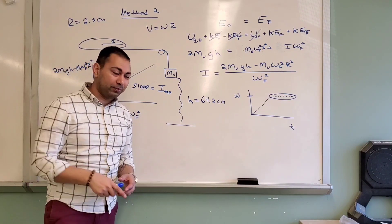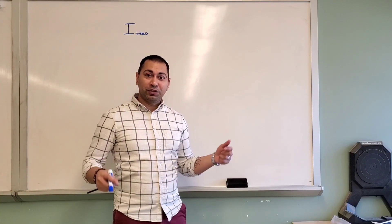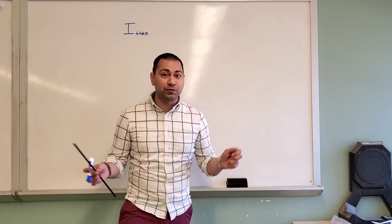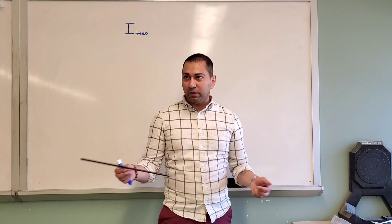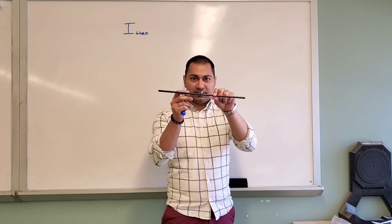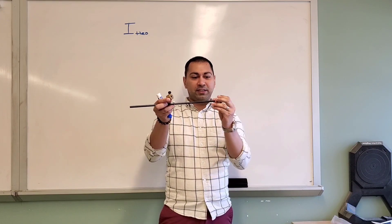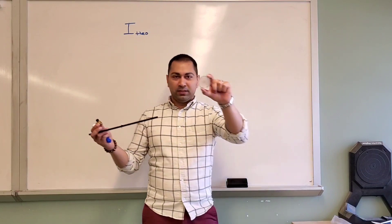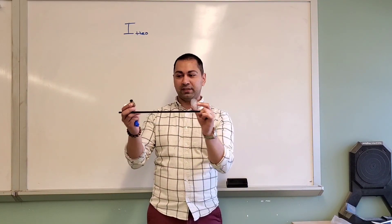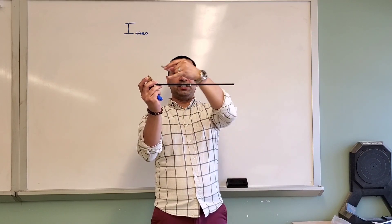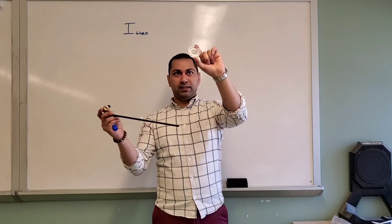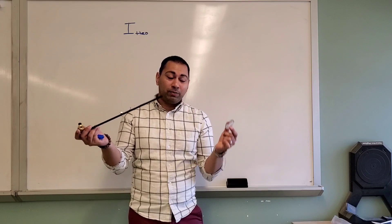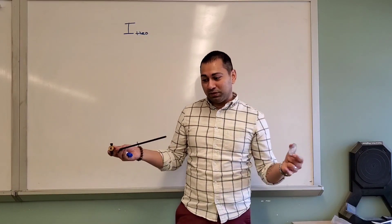Now we need the theoretical value of I. To do that, we identify what's actually rotating in the apparatus: a rod with some mass, two small heavyweight masses attached to each end of the rod, and a small pulley that also has mass. These components rotate about the central axis. To calculate the total I, you simply add up all the individual moments of inertia together — just like adding masses.